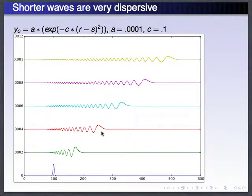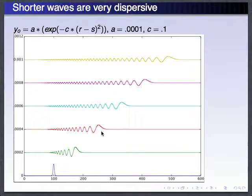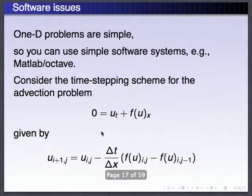The message here is that essentially a random shape will break up into this dispersive wave train. It matches the data that was taken in Australia in 1960. It's a plausible explanation for that long oscillatory wave train that you saw in that data. Whether this is the right explanation, I unfortunately have no idea — I have to just throw it out there. I'm hiding behind my role as the mathematician.